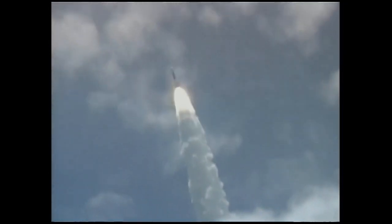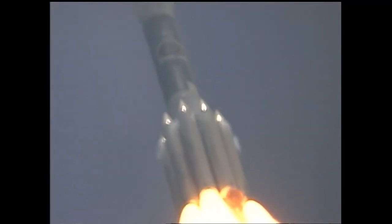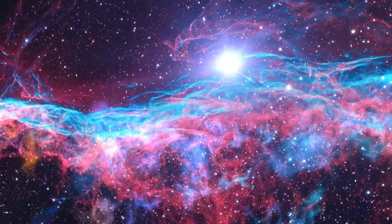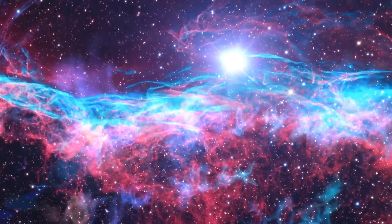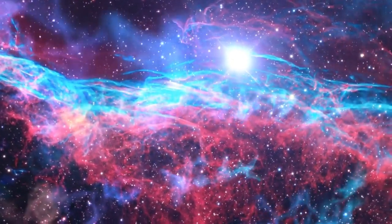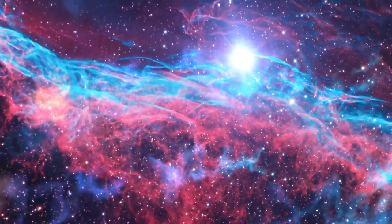What about the New Horizons probe, the first probe to travel to Pluto and its moons? New Horizons' speed is 58,536 kilometers per hour. It was launched from Earth in mid-January 2006 and took 9 and a half years to reach Pluto. It would take about 78,000 years for New Horizons to reach the Alpha Centauri system if it were pointed in that direction, which it is not.